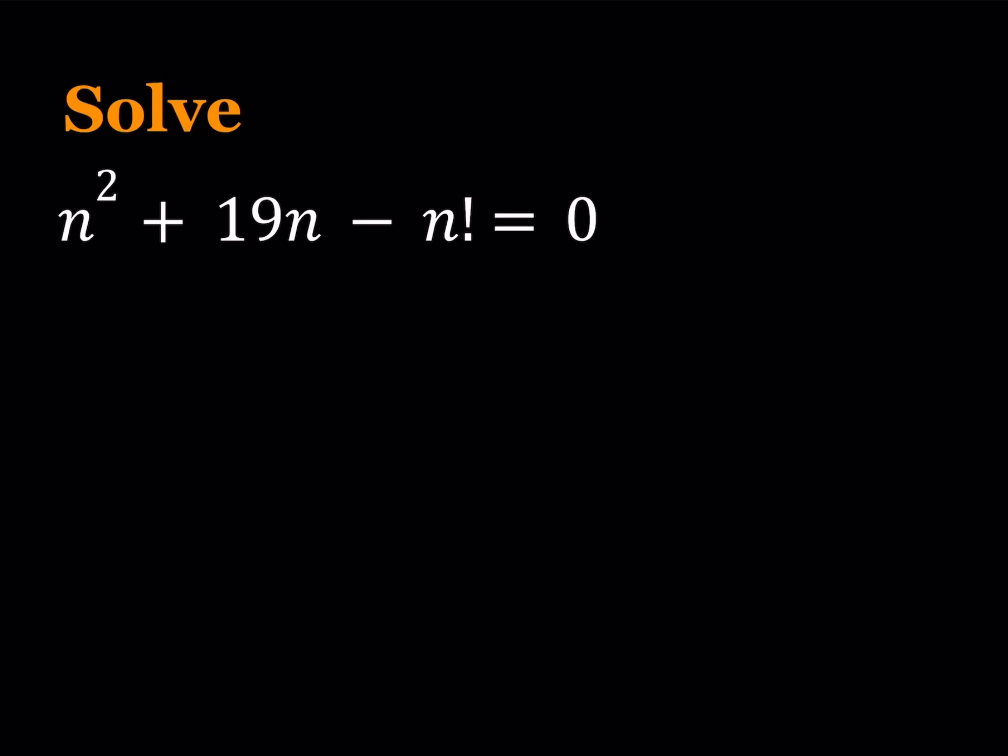Now, n squared plus 19n minus n factorial equals 0, and we're going to be solving for n. n is a non-negative integer. In other words, it's either positive or 0.